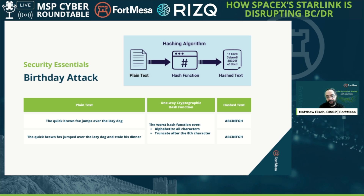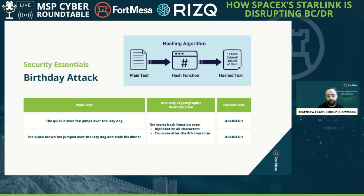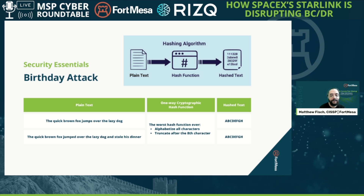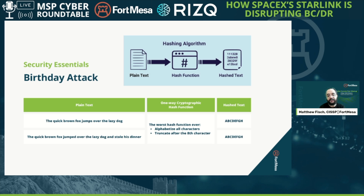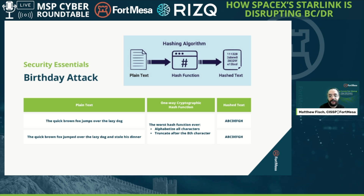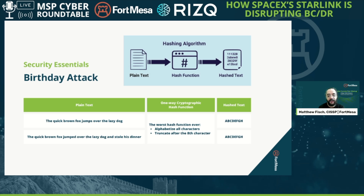I'll talk more about specific ciphers in a moment, but just to give an example here, I put together a little chart talking about the worst one-way cryptographic function I could think of. So we have 'the quick brown fox jumps over the lazy dog.' For any font geeks out there, one of the unique things about that sentence is it uses every letter of the English alphabet. However, if we ran our hash function over it — which is alphabetize all the characters and truncate after the eighth character —